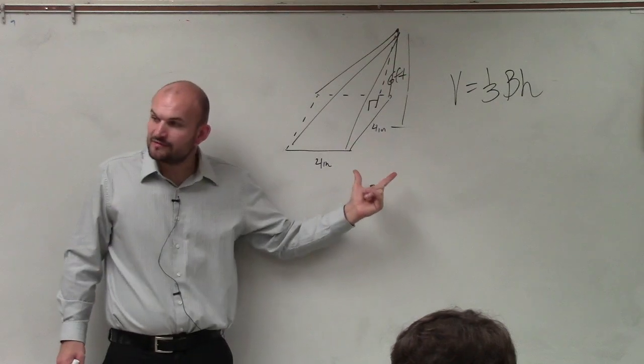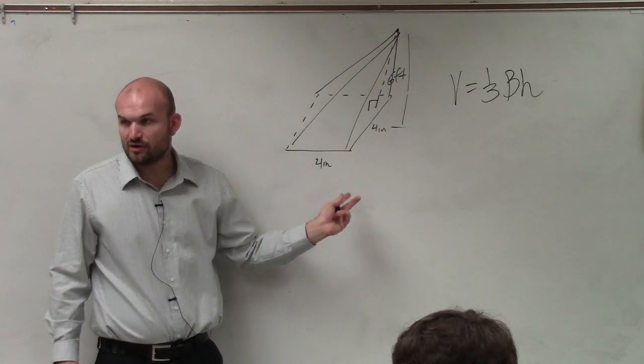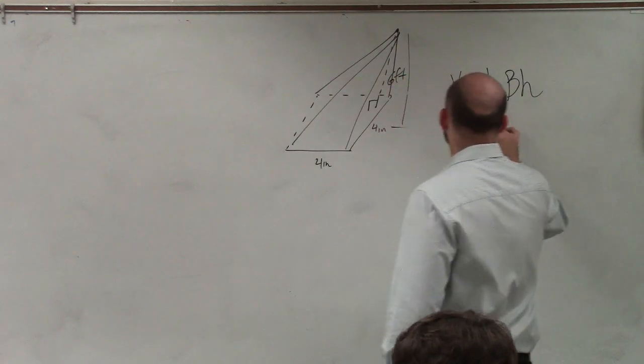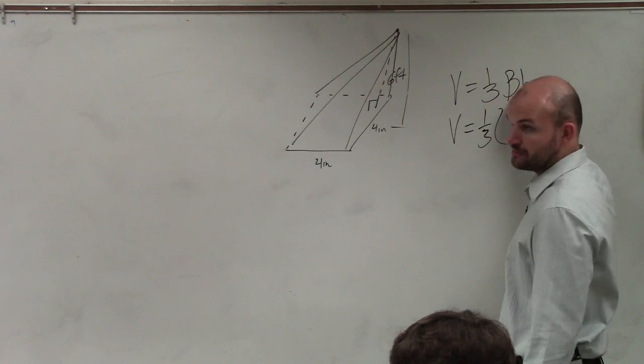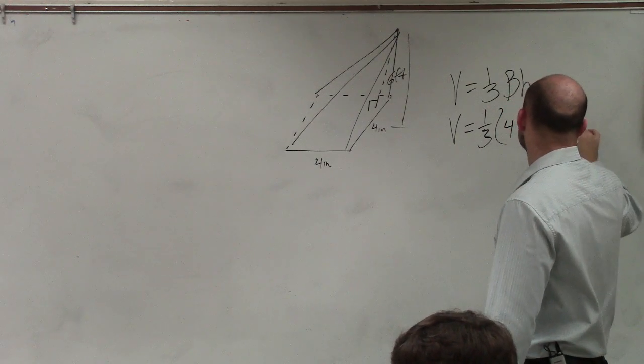The base is from here to the top at 6 feet. So all I need to do is find the area of the base. Well, this is a square base because two sides are 4 and 4. So therefore, all I need to do is say one-third base, which is going to be a square, which will be 4 times 4 times 6.